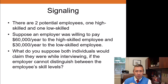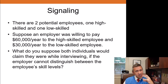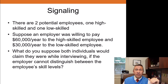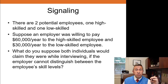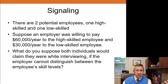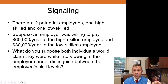We're going to go through a problem now to examine how signaling could work. For screening it's kind of exactly the opposite — if we figure it out for signaling, you could figure it out for screening easily enough. Consider two potential employees, one high-skilled and one low-skilled. An employer is willing to pay $60,000 per year to a high-skilled employee and $30,000 a year to a low-skilled employee. Both would say they're high-skill, and if the employer can't distinguish them, that's a real problem. This is where signaling can come into play.